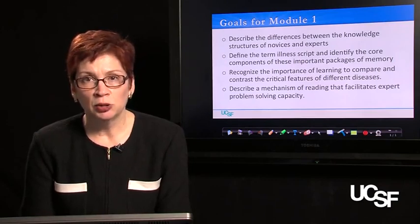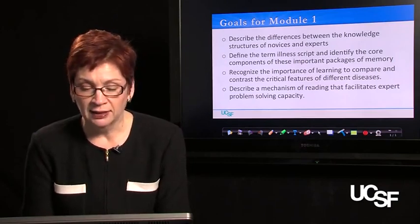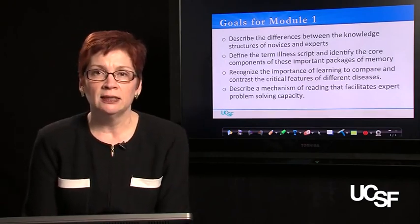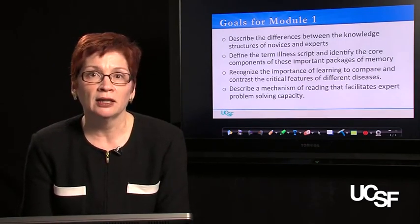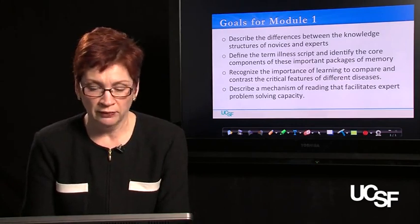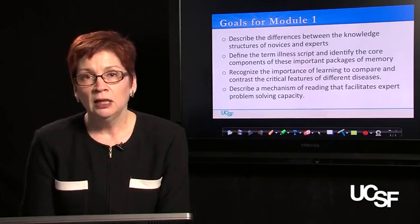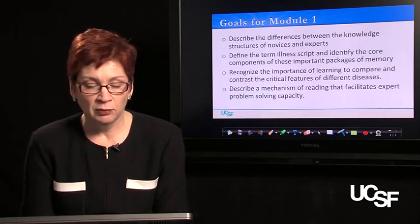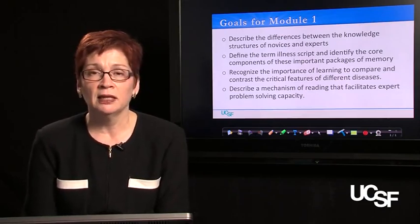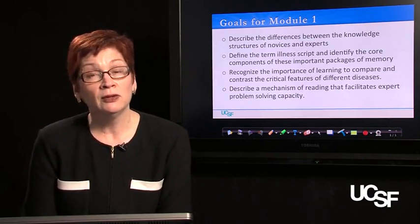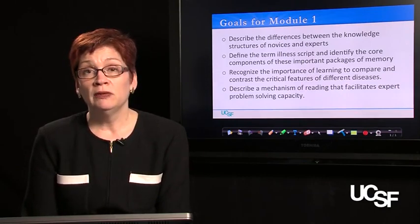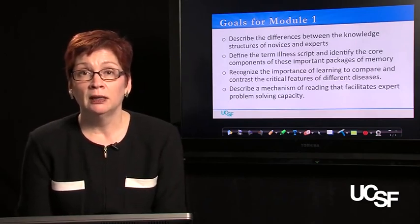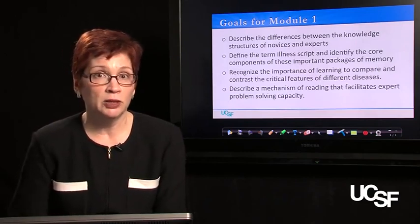By the end of module one, we want you to have fully embraced the fact that learning to compare and contrast the critical features of different diseases is essential to accurate and efficient clinical problem solving. Finally, in module one, we'll talk about a mechanism of reading that facilitates the development of expert problem-solving capacity. This very active reading style may be different from what you've been doing, but we believe it will help you assimilate the concepts throughout the rest of the course.